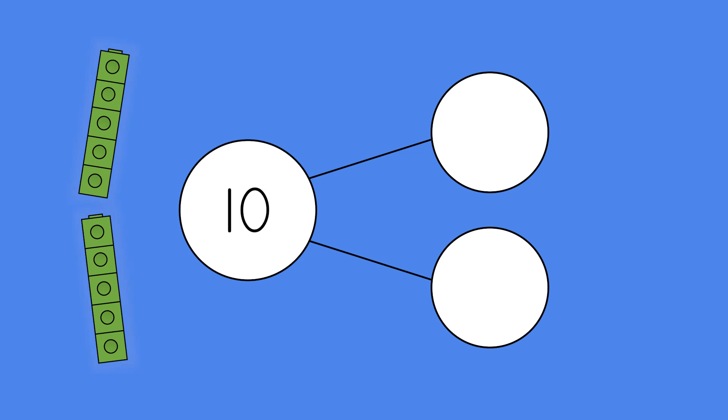Look! Now we have two parts. Pause the video and count each part. Then, complete the number bond. Press play when you are done.